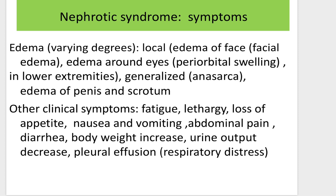Symptoms of nephrotic syndrome: the most typical symptom is edema. It can be of varying degrees — local edema, or most specifically facial edema and periorbital swelling, and edema of the lower extremities. Renal edema typically starts from the face and eyes, which is a main differential criterion from cardiac edema, which always starts from the lower extremities. In most cases it can be generalized edema, also called anasarca, with edema of the penis and scrotum.